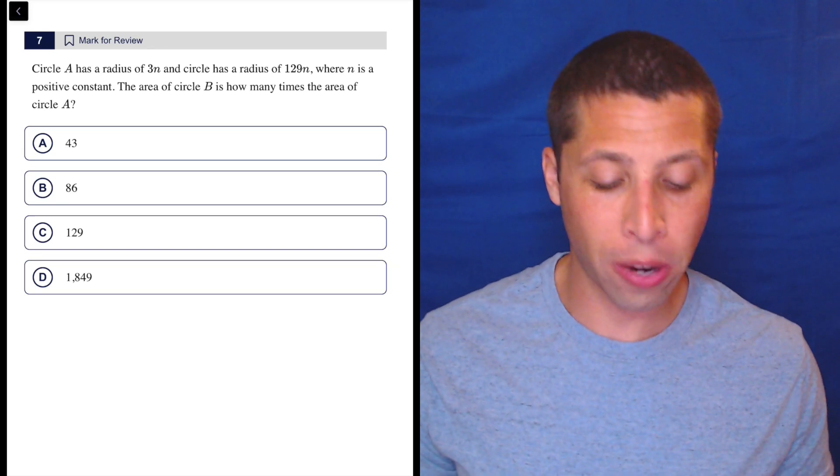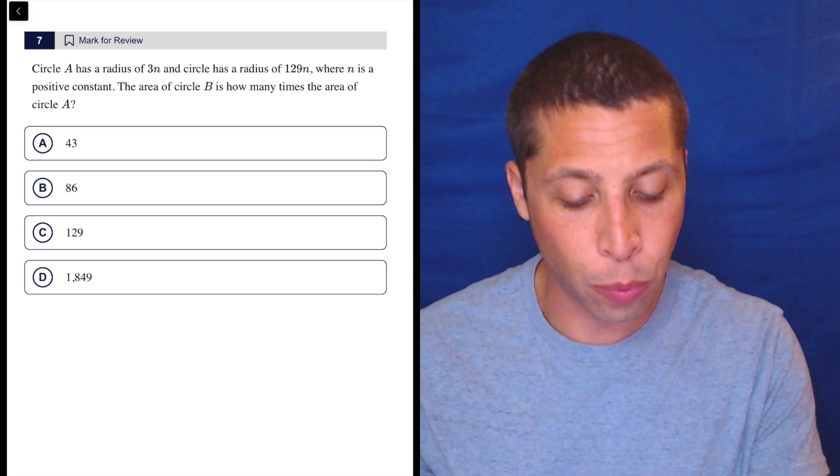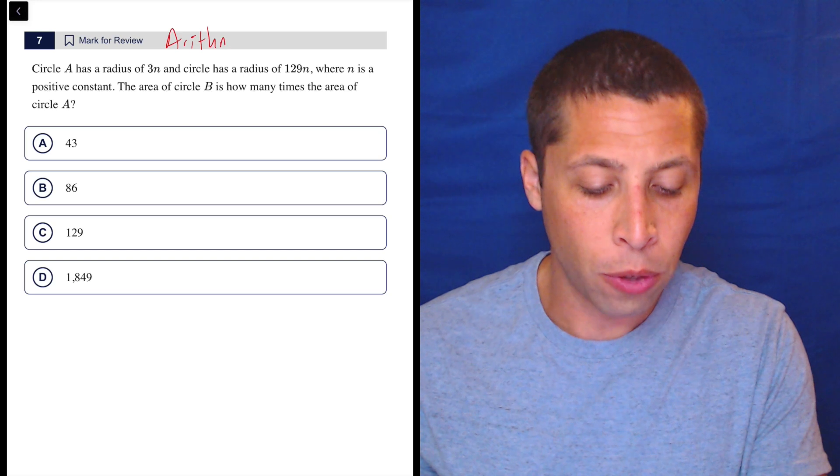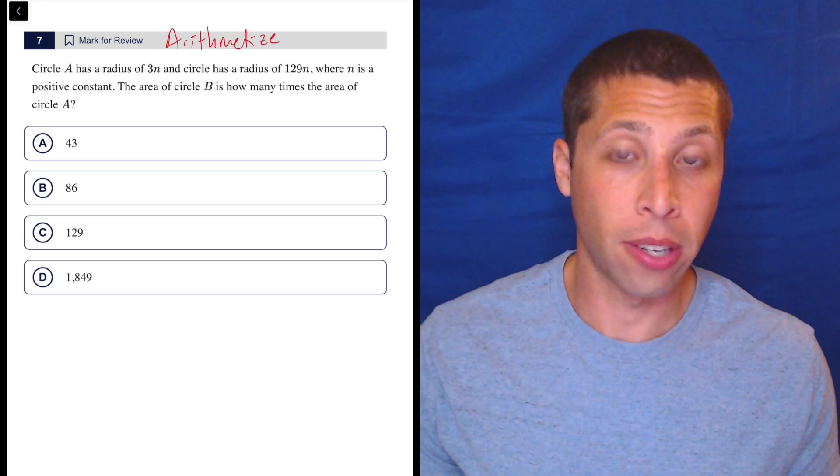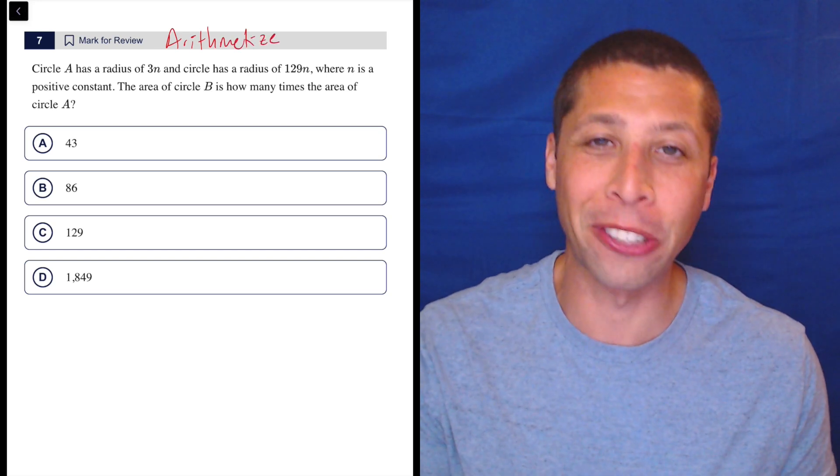Guys, this is so easy to avoid the trap if you just instantly recognize we can arithmetize here. Notice what they did. They gave us the radiuses of two circles. Let's make sure we know what shapes we're dealing with.